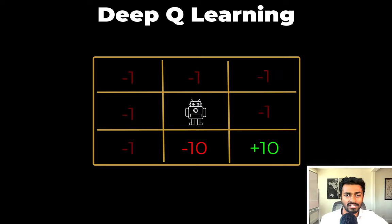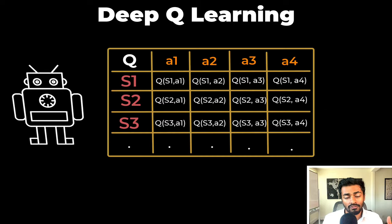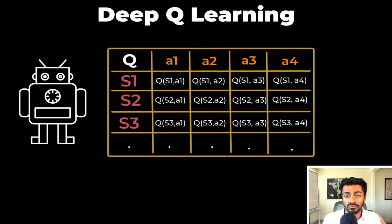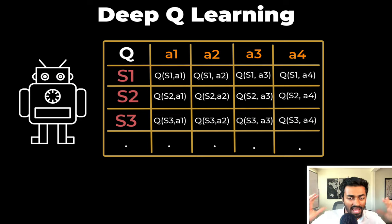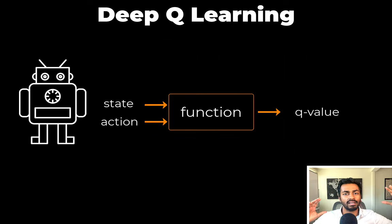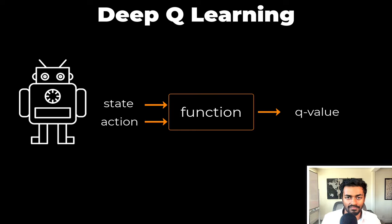This is a simple world of just nine grid squares where there's a finite number of states, but what if there were a lot of states? Well, that would mean that this Q-table becomes really big — too big to fit in Frank's tiny little head; it would literally run out of memory. So instead of having this table as a conscience, it's better to have a function. This function takes in a state and an action and outputs a value that emphasizes how good that action was for the state. This value is known as a Q-value.